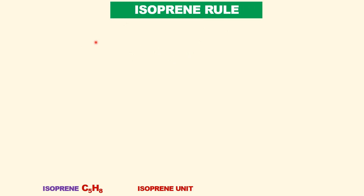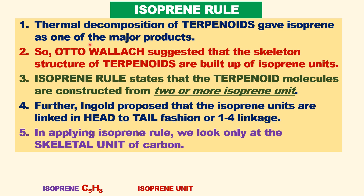What is the Isoprene Rule? On heating, terpenes or terpenoids give isoprene as one of the major products. Wallach suggested that the skeleton of terpenoids is built up of isoprene units. Upon heating, terpenoids break down and isoprene units are obtained.